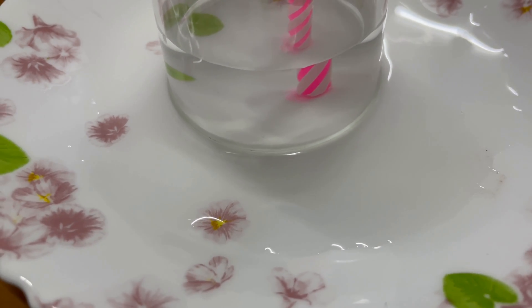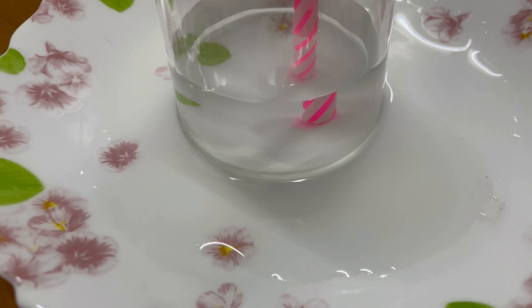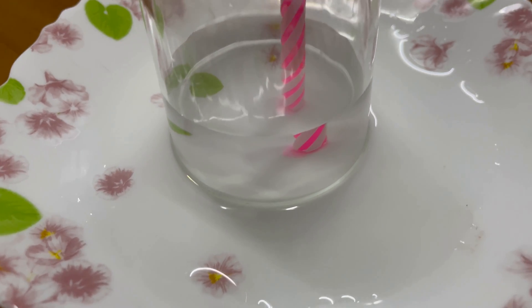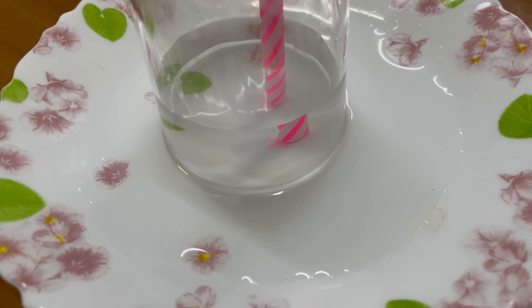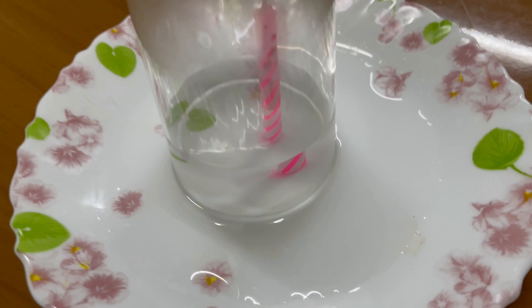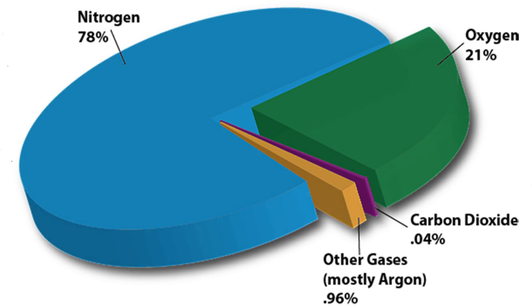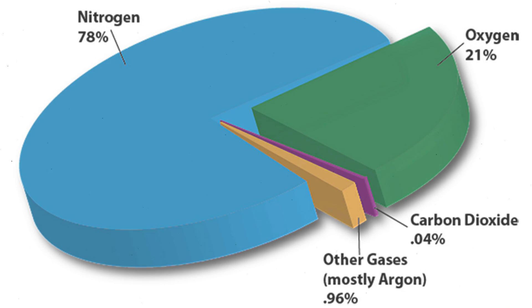It happens because as the candle burns, it uses up one part of air called oxygen. Air consists of 21% oxygen, 78% nitrogen, and 1% other gases.